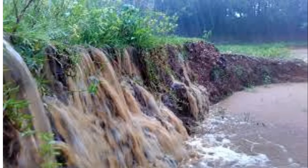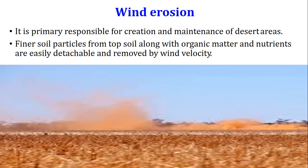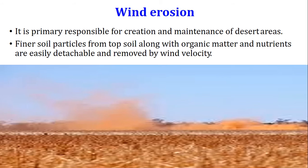This image shows soil erosion by water. Wind erosion is primarily responsible for the creation and maintenance of desert areas. Finer soil particles from the topsoil, along with organic matter and nutrients, are easily detached and removed by wind velocity. In this image, you can see how wind erosion occurs.